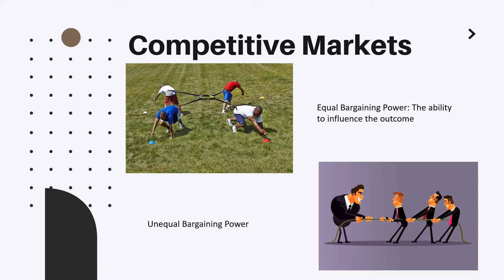This is similar to a situation where there are one or few companies in the market who can affect the price. On the other side we have customers, who do not have enough power to affect the outcome. Think of this second scenario as a non-competitive market where one company has enough bargaining power and resources to set or at least affect the price.